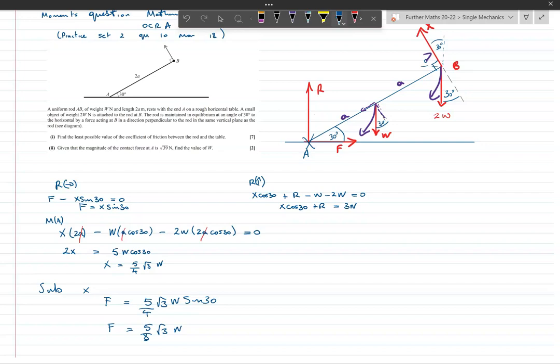Substituting into this one, I'm going to get X cos 30, so that's 5 over 4 the square root of 3W times by the square root of 3 over 2, because cos 30 is square root of 3 over 2, plus R equals 3W. Combining these two together, that's going to be 15 over 8W. Taking the 15 over 8W to the other side, I'm going to get R equals 9W over 8.